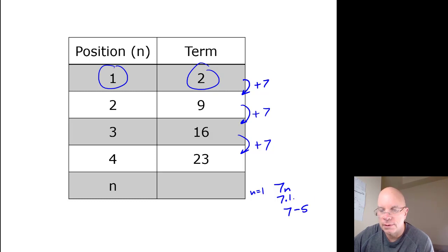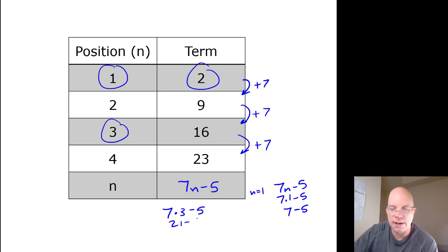So here we're subtracting five to make the rule work: seven n minus five. And then you test it with another value of n. Seven times three minus five would be twenty-one minus five, that's sixteen, so that works.